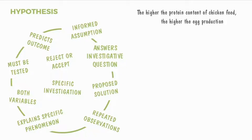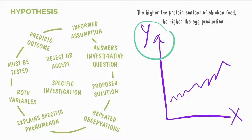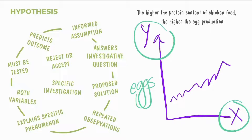A hypothesis always involves both variables. For example: 'The higher the protein content of chicken feed, the higher the egg production.' The dependent variable on the y-axis is what we measure — in this case, the number of eggs. The independent variable on the x-axis is what we manipulate or control as the investigator — in this case, the protein content of the chicken feed. This hypothesis will then be rejected if false or accepted if true.